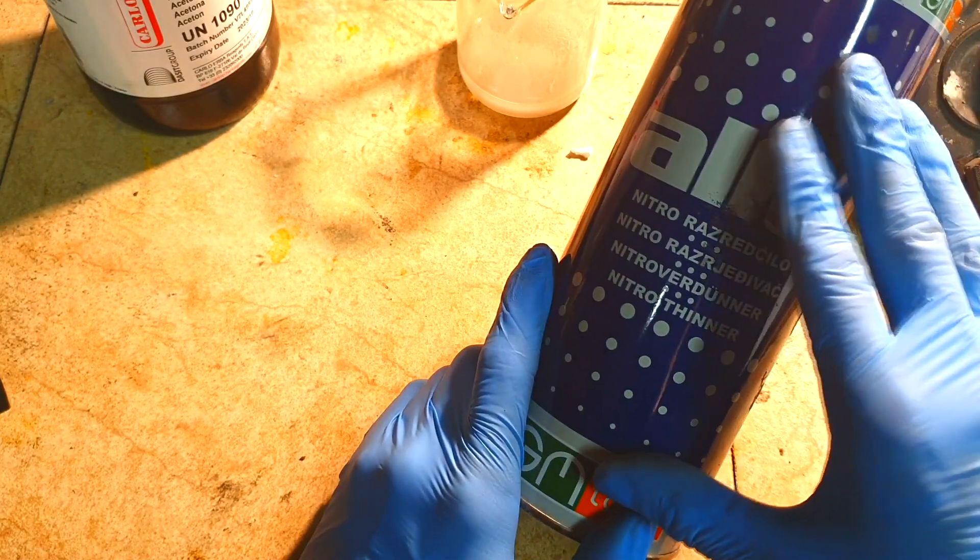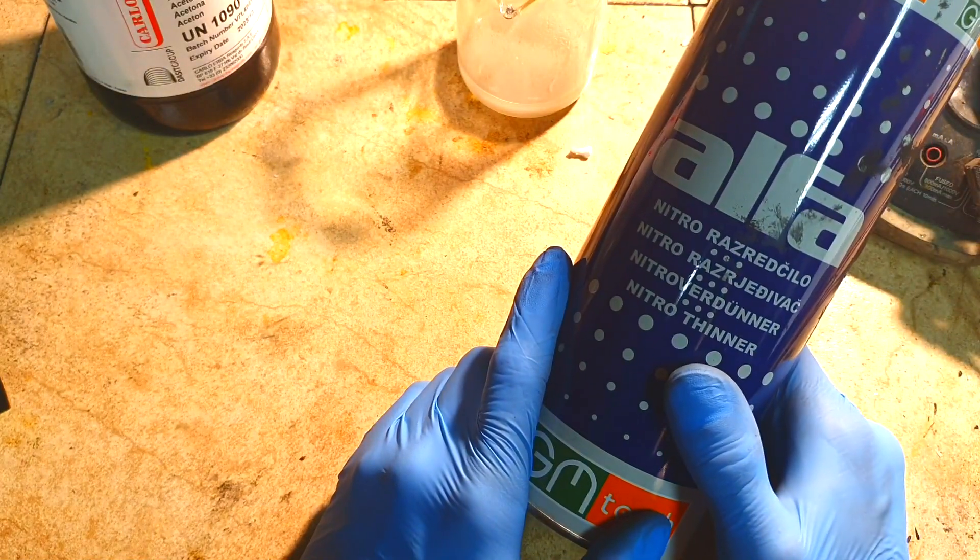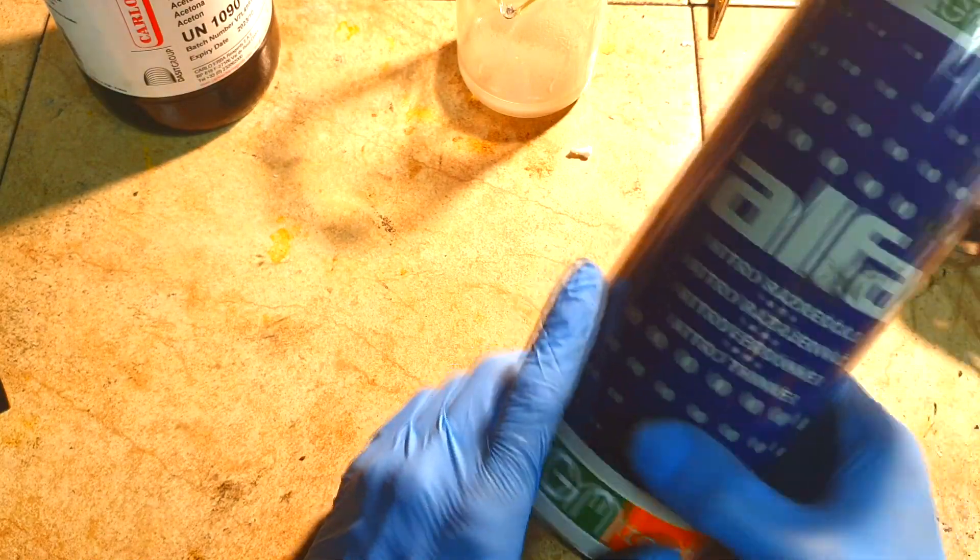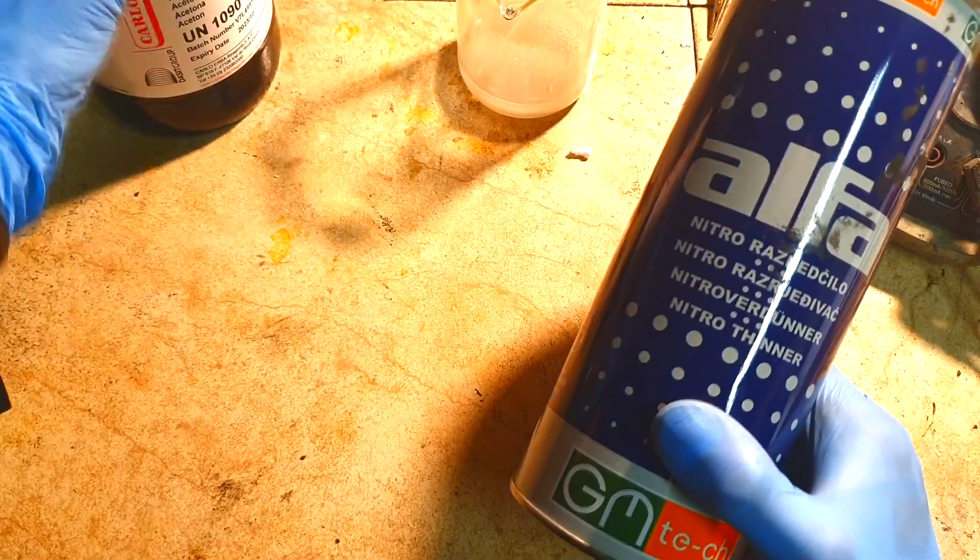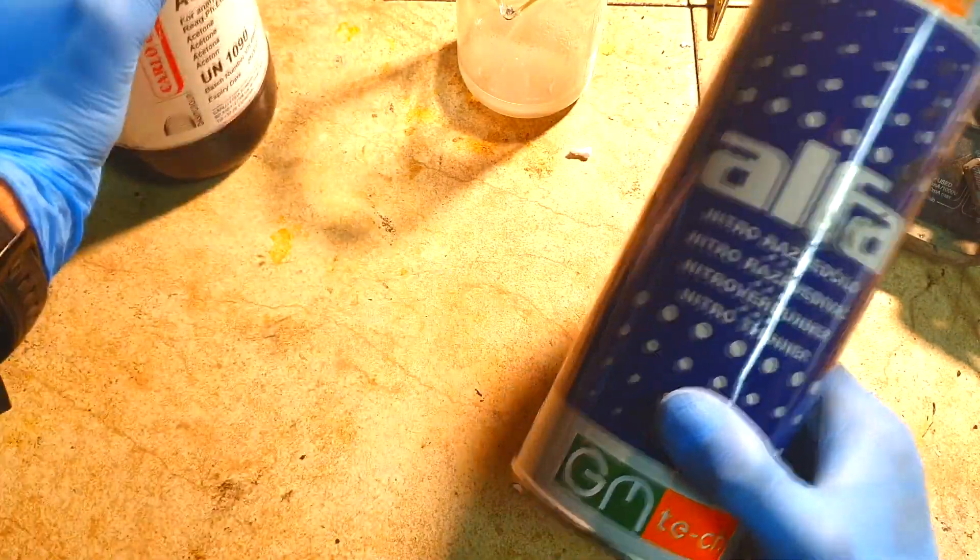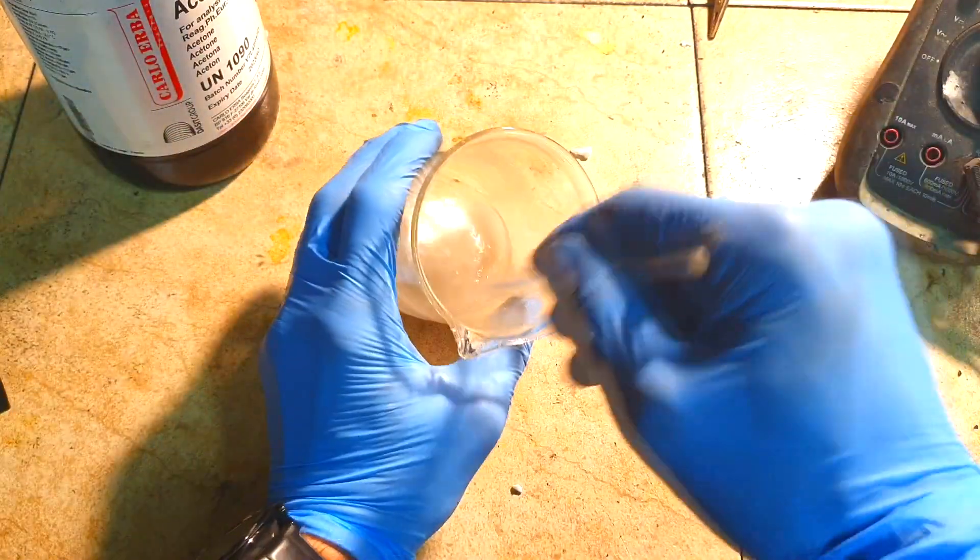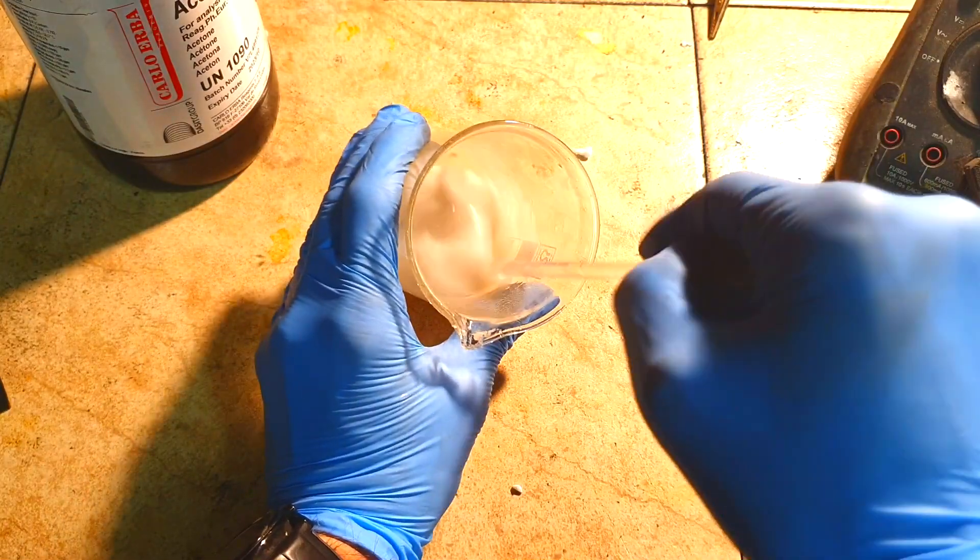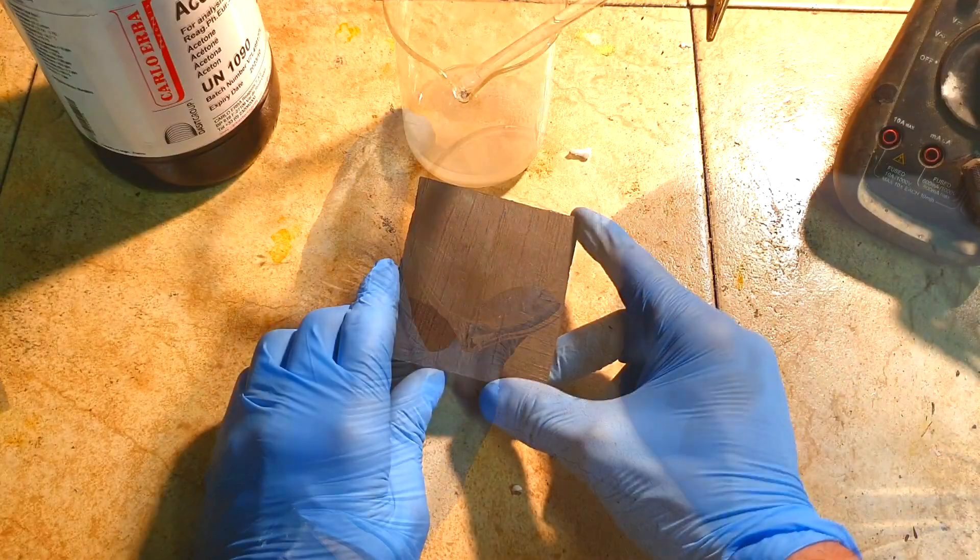It's also really cheap. You need to add just a little bit of this thinner in acetone, and then you will be able to dissolve this styrofoam slurry.